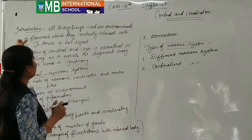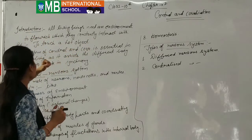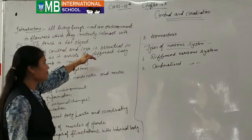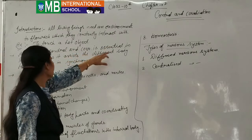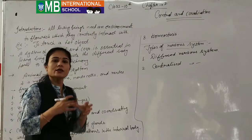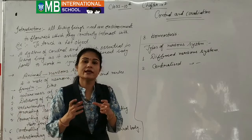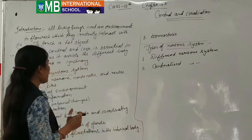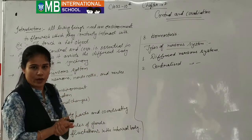So, to touch a hot object is an example of control and coordination. A system of control and coordination is essential in living beings as it assists different body parts to work in synchrony. Synchrony is the word correlated with coordination — how our body controls the senses given by our external environment.